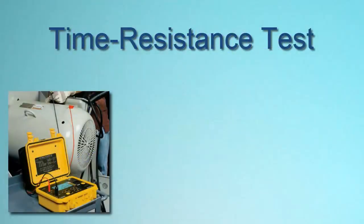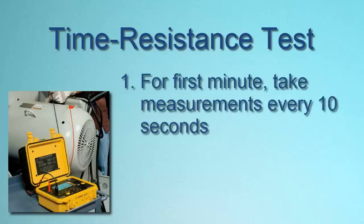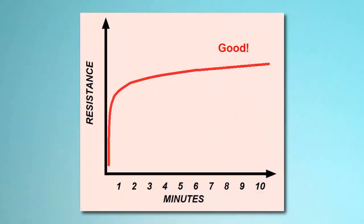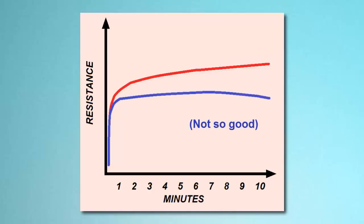Another insulation resistance measurement method is the time resistance test, also referred to as the dielectric absorption test. It involves conducting a 10-minute test. For the first minute, during which absorption current will have the highest effect on resistance, measurements are taken every 10 seconds. After the first minute, measurements are taken once per minute. When you plot the results, you should see a curve that rises relatively rapidly at first, and then continues to gradually rise throughout the testing period. If instead the curve is relatively flat or begins to turn down as the test progresses, moisture, dirt, or other factors may be compromising your insulation.